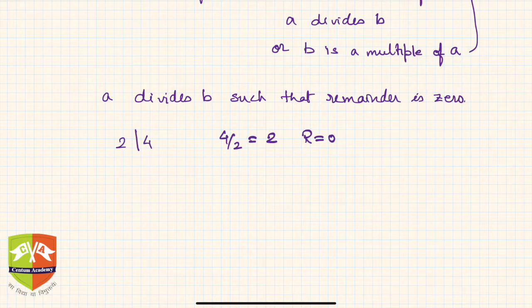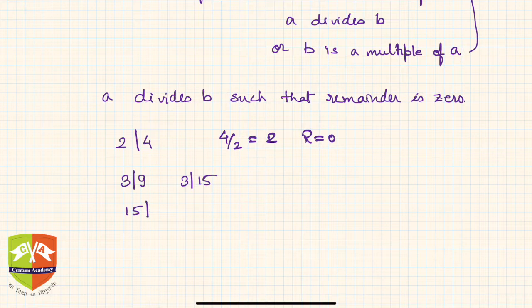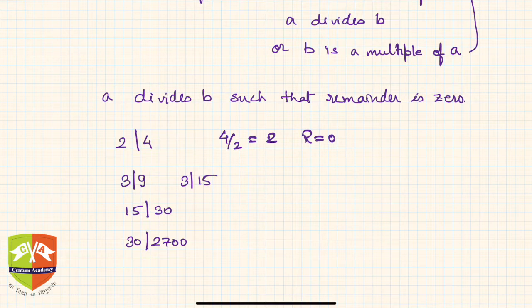We also say that 2 perfectly divides 4. Similarly, 3 is a factor of 9, 3 is a factor of 15, 15 is a factor of 30, and 30 is a factor of 2700. When we discuss factors like this, we are dealing only with integers — a and b are integers.